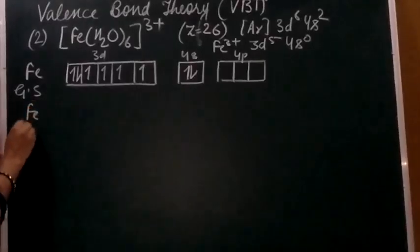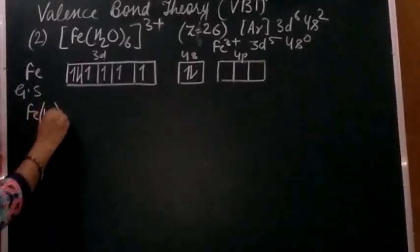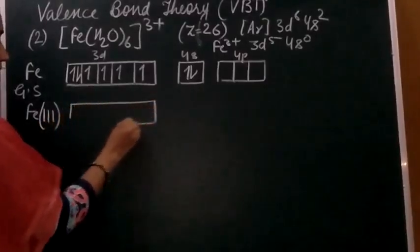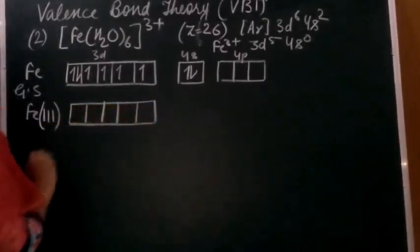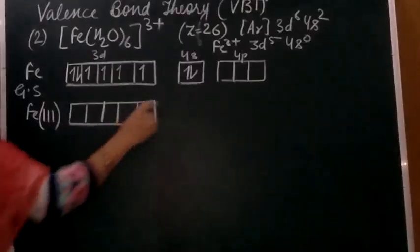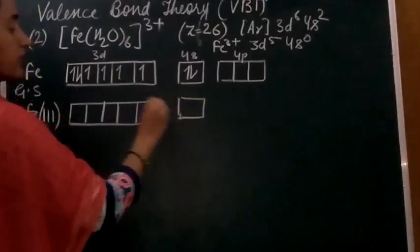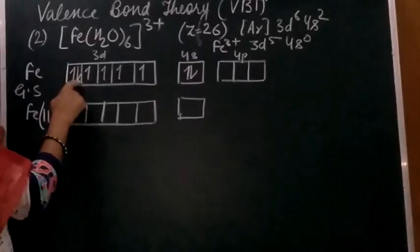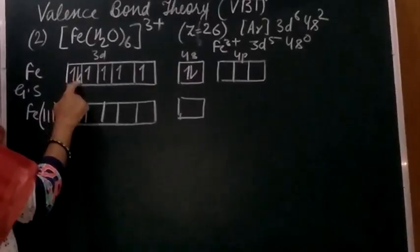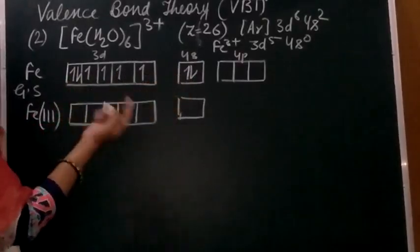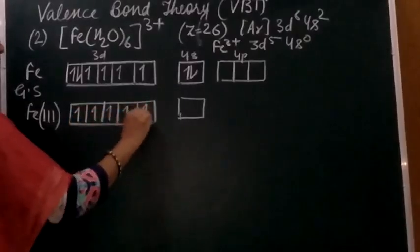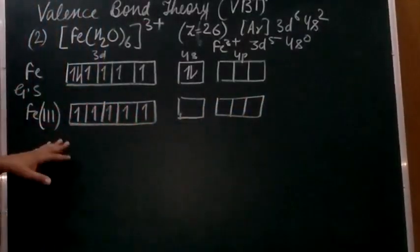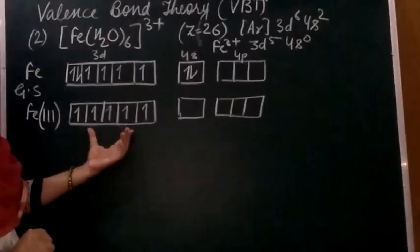Since we have an oxidation state of +3, it is Fe³⁺. When 3 electrons are removed, first the 4s subshell becomes empty, and then one more electron is removed from 3d — the last filled orbital. So 2 from 4s and 1 from 3d gives a total of 3 electrons removed, leaving 3d with 5 electrons: 1, 2, 3, 4, 5.